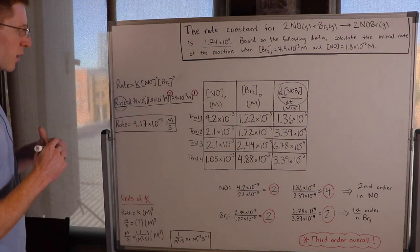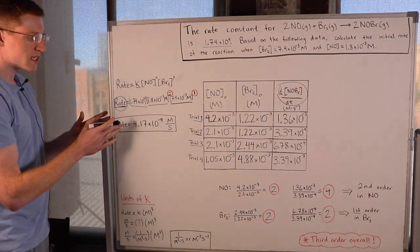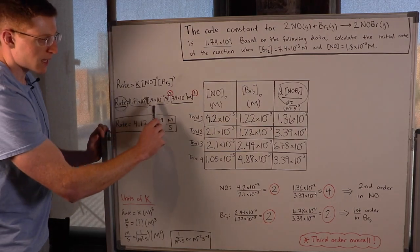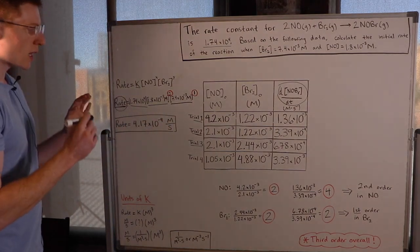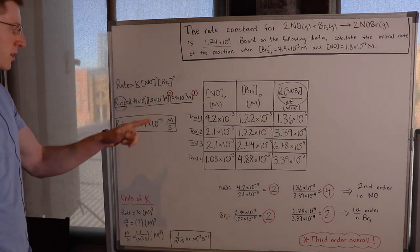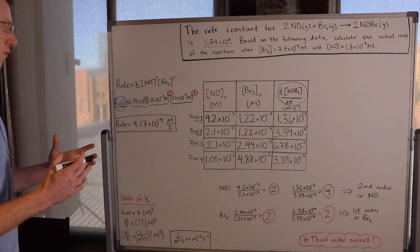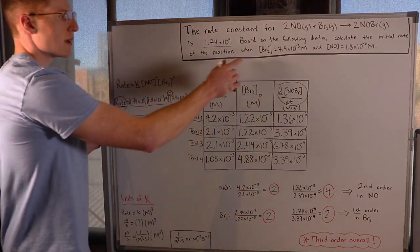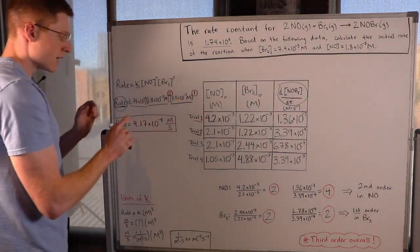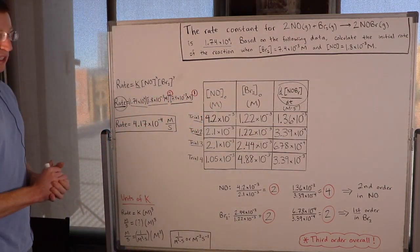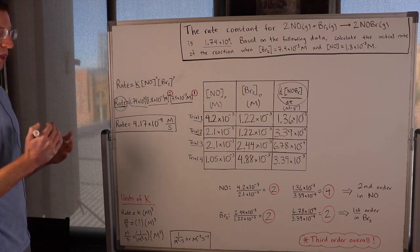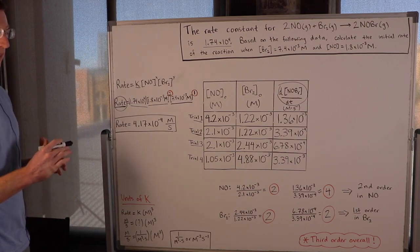Now we have everything we need to calculate the rate — this is simply a calculator problem. Type all of this into your calculator and you will find that the overall rate of this reaction with these given conditions is 4.17 times 10 to the negative 4 molarity per second.